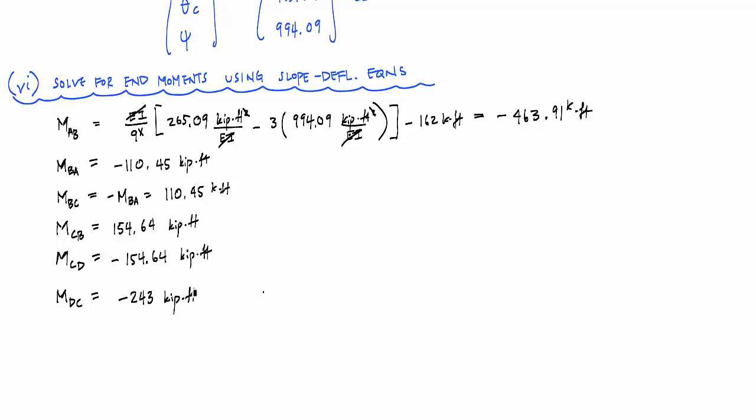And here all the negatives imply the opposite of how we drew it initially in our exploded view. We drew all the end moments going clockwise to make sense with the slope deflection equations. And we're still in the slope deflection coordinate system, if you will. And so these negative moments indicate that our moments here are positive 463.91 kip feet going counterclockwise and similarly for others.